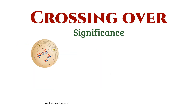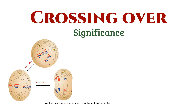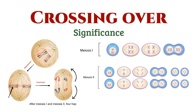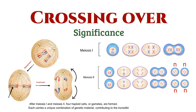As the process continues to metaphase 1 and anaphase 1, the tetrads align and separate, carrying this newly shuffled genetic material to opposite poles of the cell. After meiosis 1 and meiosis 2, four haploid cells, or gametes, are formed. Each carries a unique combination of genetic material, contributing to the incredible diversity we observe in living organisms.